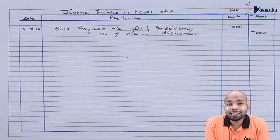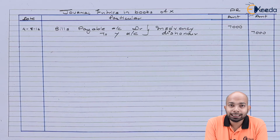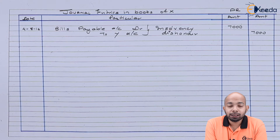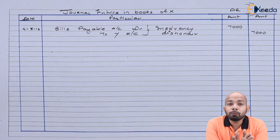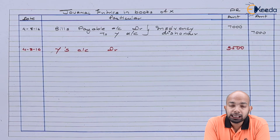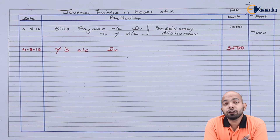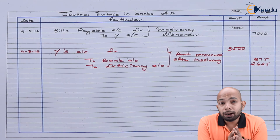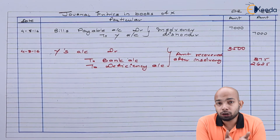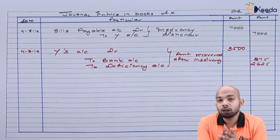Later, insolvency happened, so we have to pass the dishonor entry: Bills Payable Account debit to Y Account. Whatever amount has been received will be part of the bank account and whatever is not will be part of the deficiency account. Make sure when a finance has been raised and split between two people, you don't mention the bad debts account but the deficiency account. Out of Rs 7,000, Rs 3,500 was supposed to be recovered from X, but only 25 paise in a rupee — 25% — could be recovered, giving a balance of Rs 875. The deficiency account has been posted accordingly.